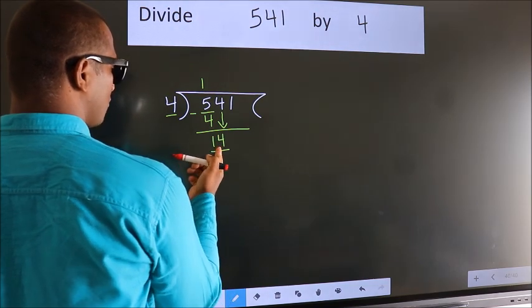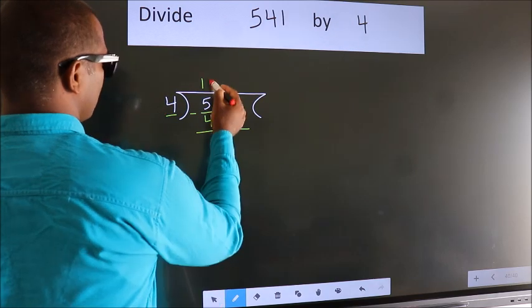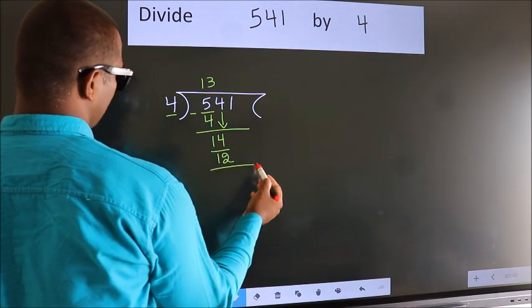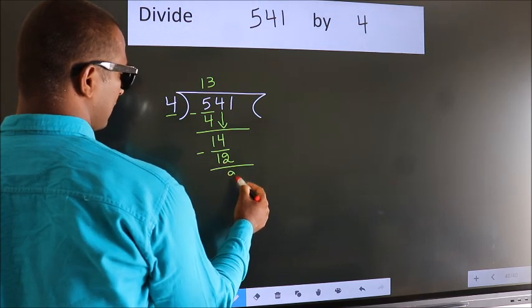A number close to 14 in 4 table is 4 times 3 is 12. Now, we subtract. We get 2.